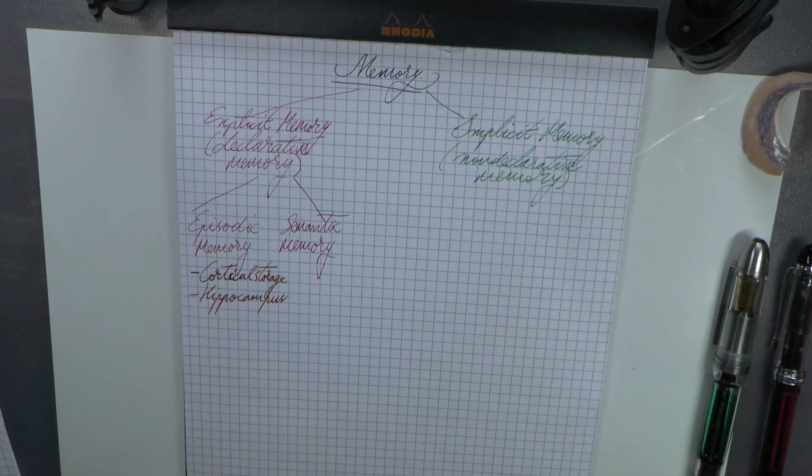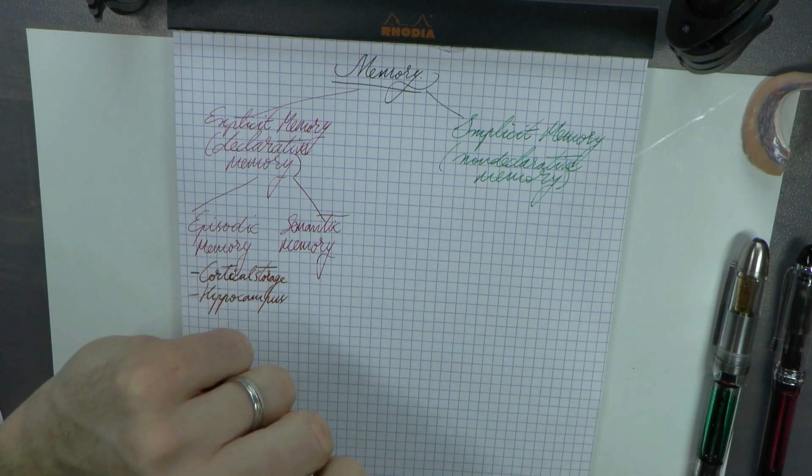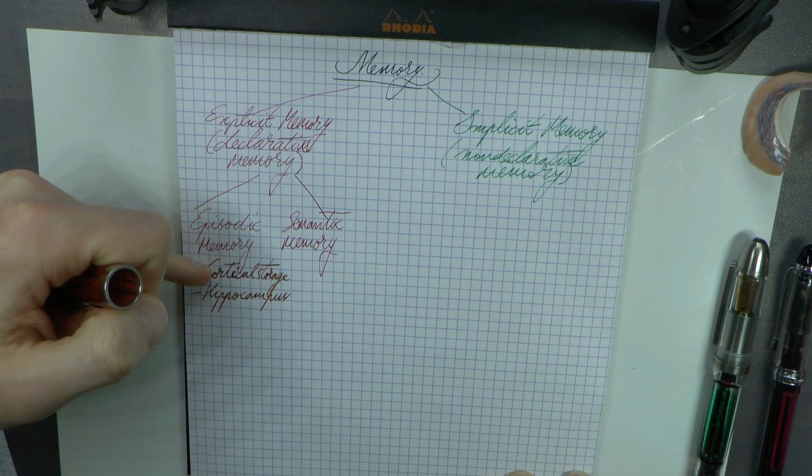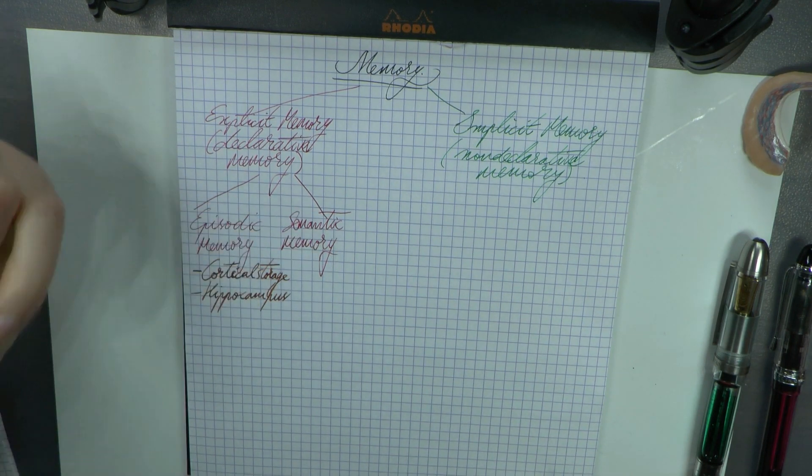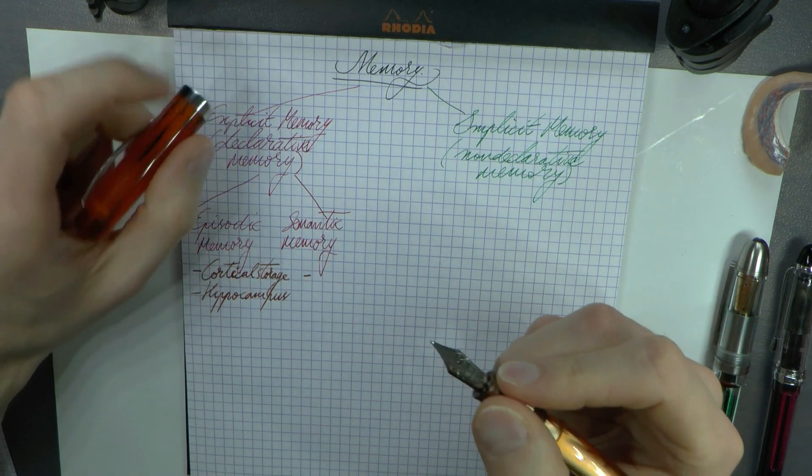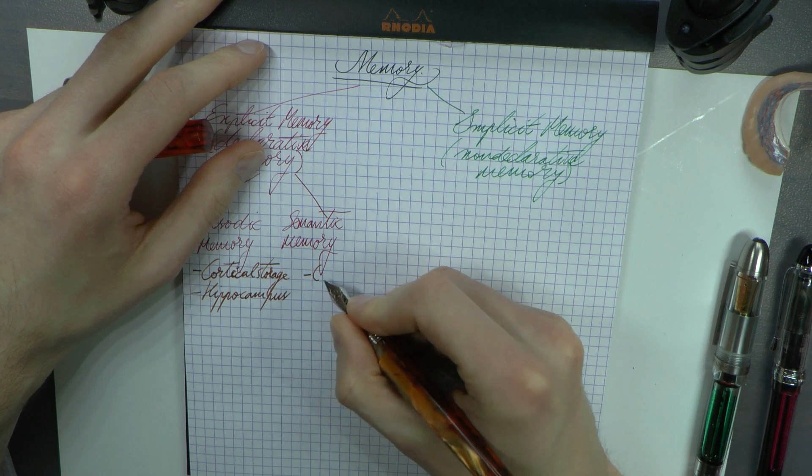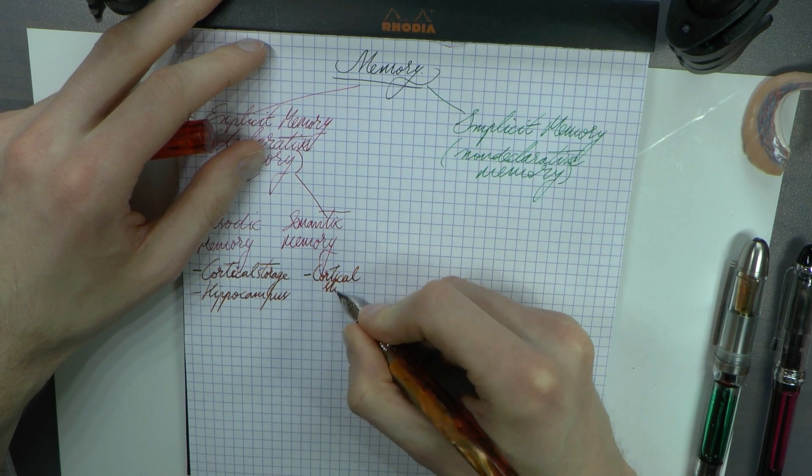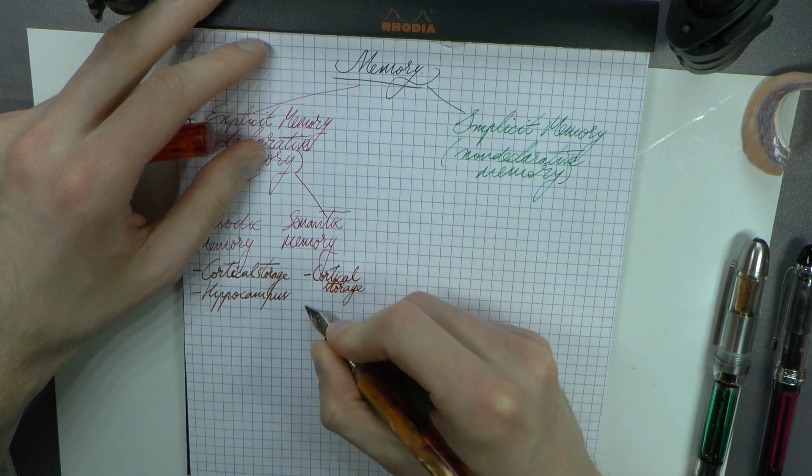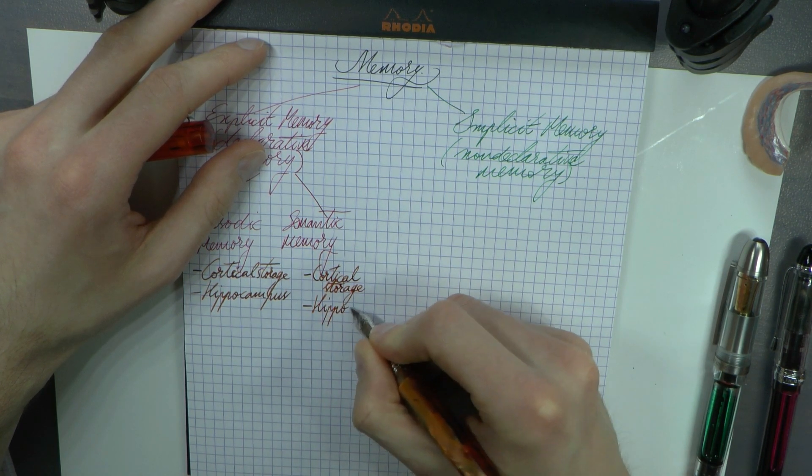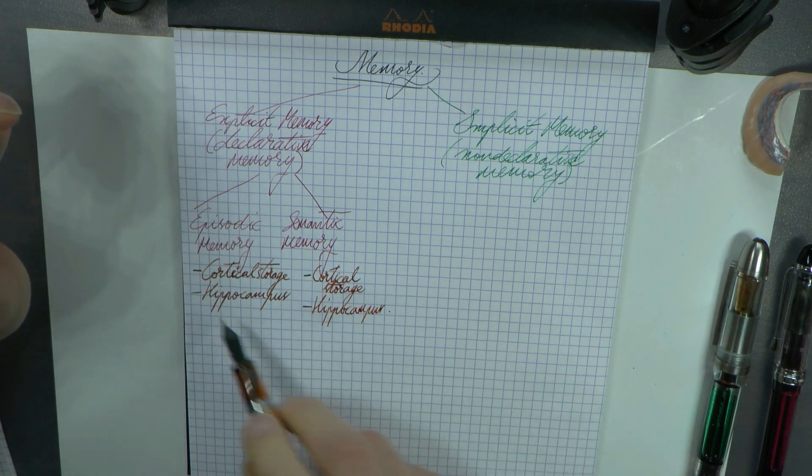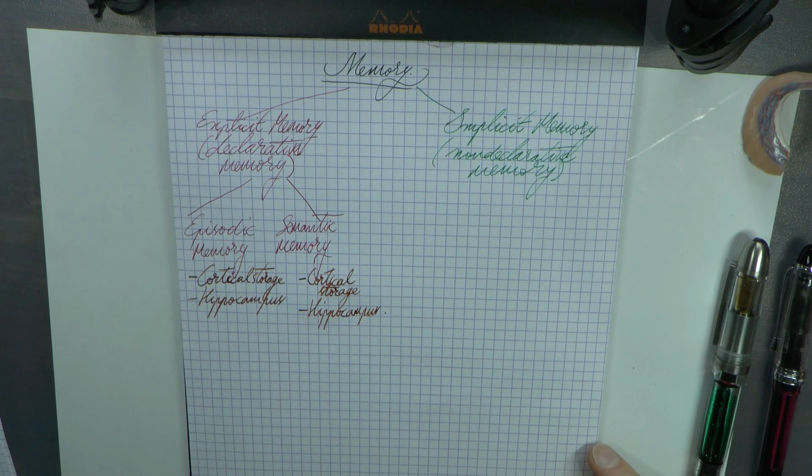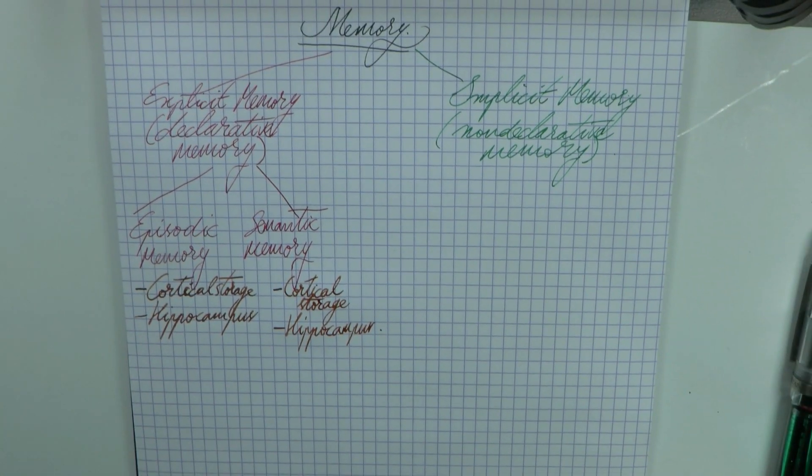But then there also was semantic memory, the memory for facts. This was patient KC who had damage in these areas and no longer had episodic memory, but he seemed to have okay semantic memory. Now we have patient HM, and patient HM had semantic memory issues—he could no longer store new facts. So this too has cortical storage and this too has the hippocampus involved. That's strange, hippocampus is involved in both episodic and semantic memory. That brings us to the issue of are these actually separate memory processes? That's a good question and that's something we can come back to.